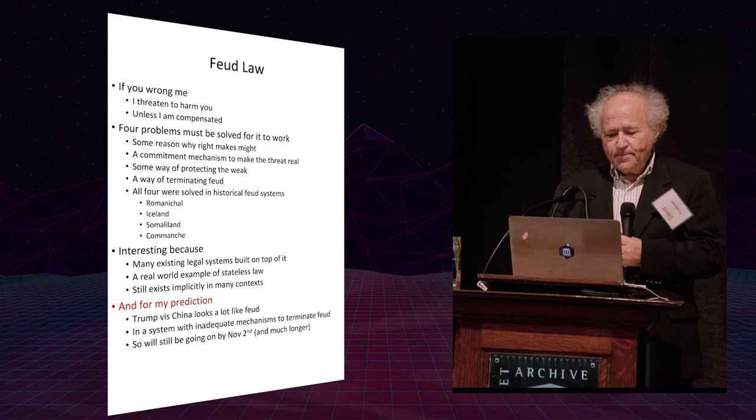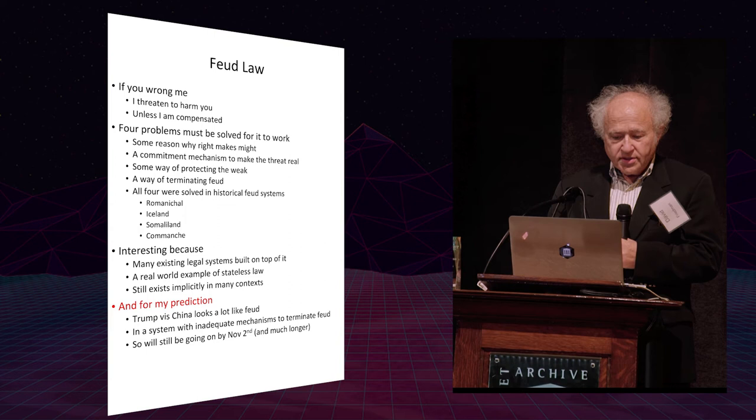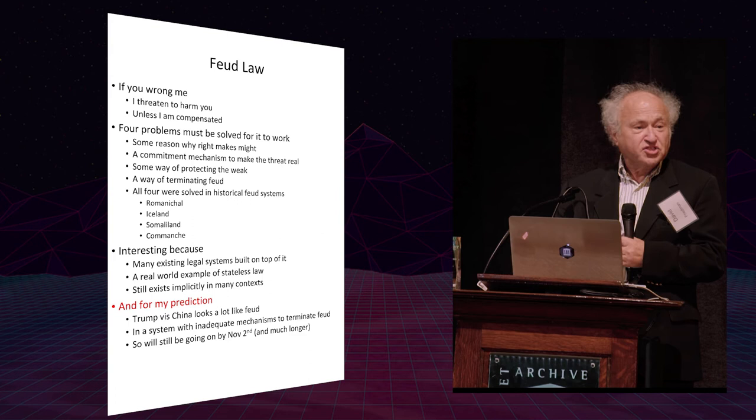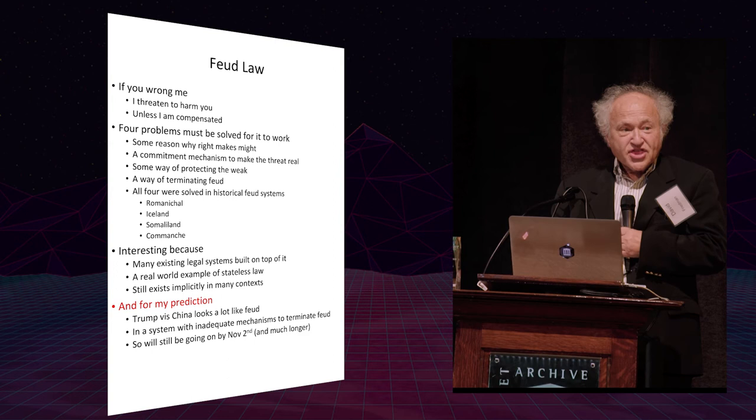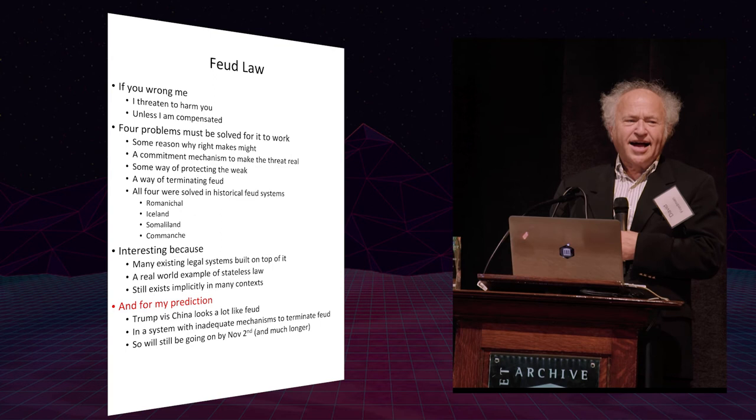Other ways in other societies. Finally, you need a way of terminating feud, because the risk of this system, what people associate with the term feud, but I think is not typically what actually happens, is the idea that I think you've wronged me. I demand compensation. You refuse. I harm you. You say, aha, that harm was wronging me. I've got to retaliate. And it goes on and on. So you need a way of terminating feud.